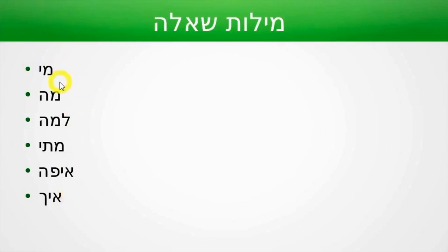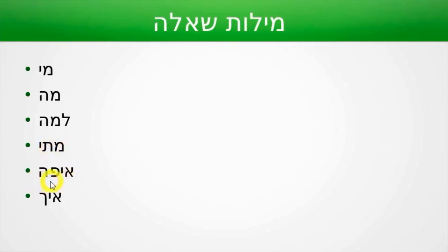All of these are question words: mi means 'who,' ma means 'what,' lama means 'why,' matai means 'when,' eifo means 'where,' and eich means 'how.'